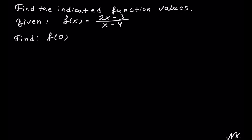In this example we will find f of 0. We take the function f of x, which is the fraction 2 times x minus 3 in the numerator out of x minus 4 in the denominator, and instead of x we're going to substitute 0. So we have 2 times 0 minus 3 out of 0 minus 4. Now we just need to follow the order of operations to simplify.